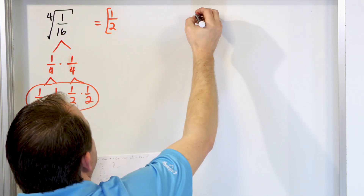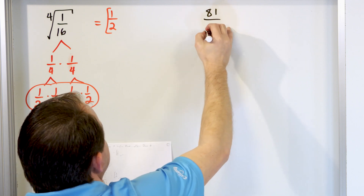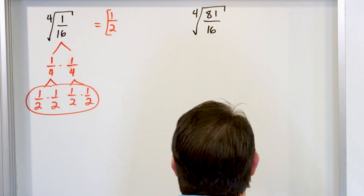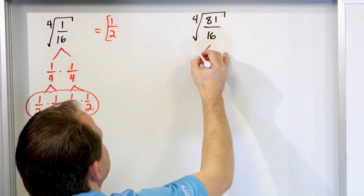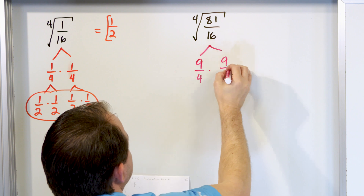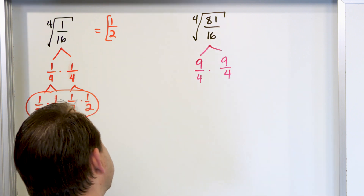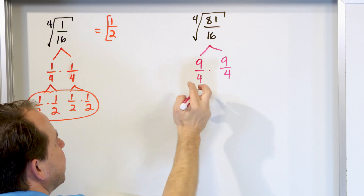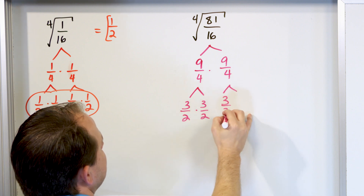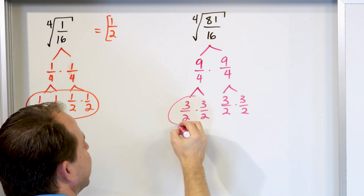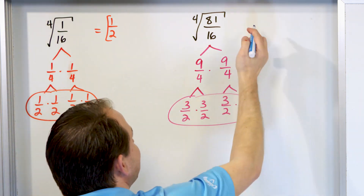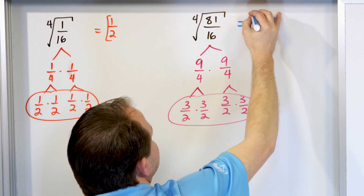Let's do another fourth root problem. What if we had 81/16 and we're going to take the fourth root of that? We'll do the same thing — think of a factor tree. We know 9 times 9 is 81 and 4 times 4 is 16, so we do 9/4 times 9/4. Multiply those together and we get it back. Both of those are perfect squares, so we have 3/2 times 3/2, and then 3/2 times 3/2 again. We have a set of four, so the answer is 3/2.